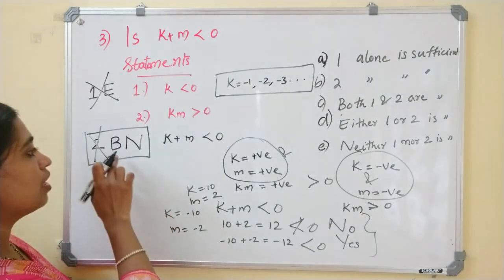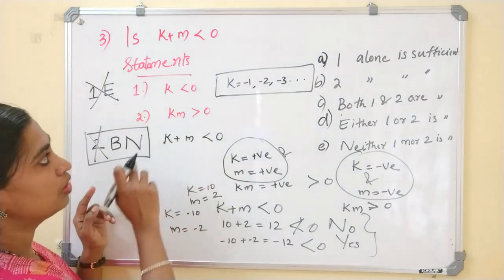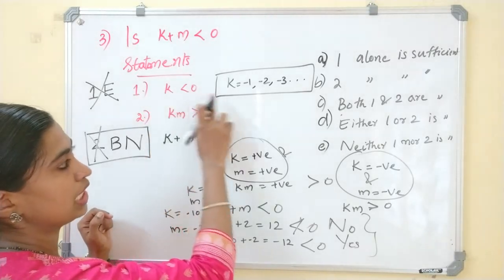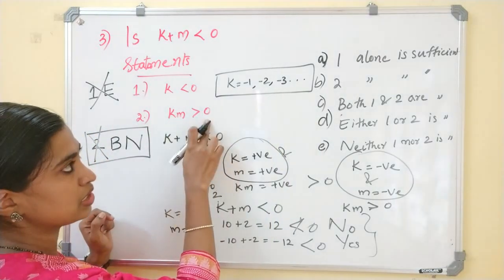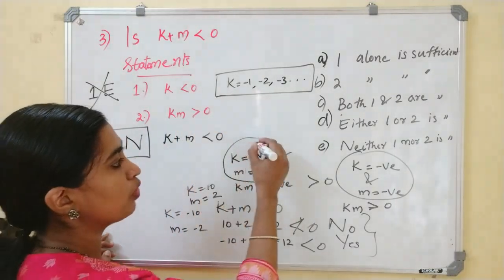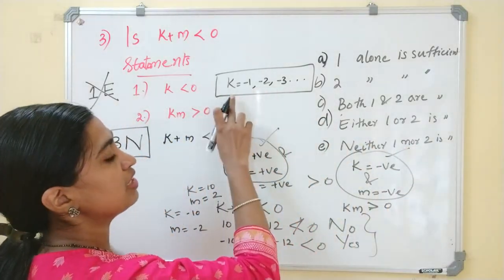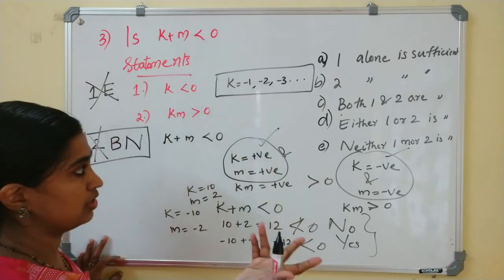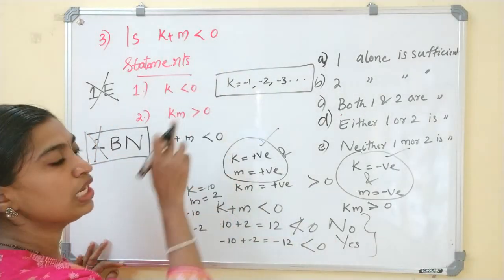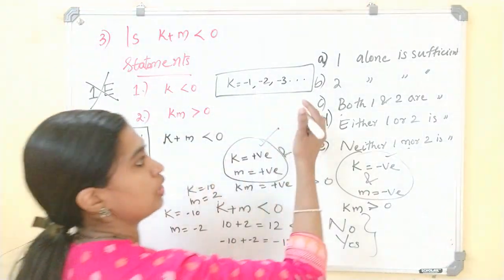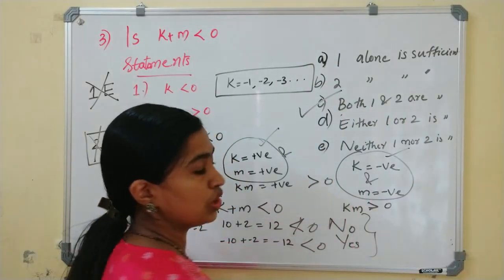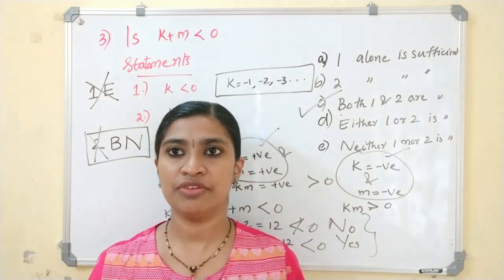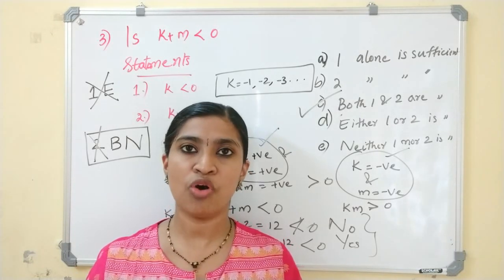So the next case is both statements together. Statement one gives K is less than 0, meaning K is negative. Statement two gives KM greater than 0, which is possible only if both are positive or both are negative. Since statement one tells us K is negative, M must also be negative. So K plus M is the sum of two negative numbers, which is less than 0. Therefore, the answer is: both one and two are sufficient to answer the given question. Hope you are able to follow my lecture. If you have any doubt, you can comment below. We will see more problems in the next class. Thank you.